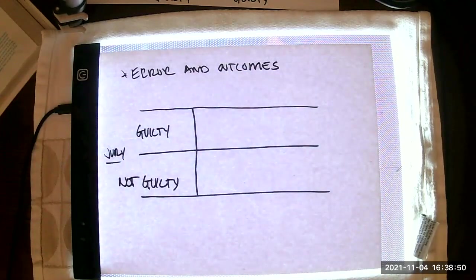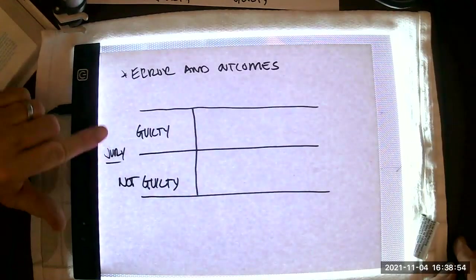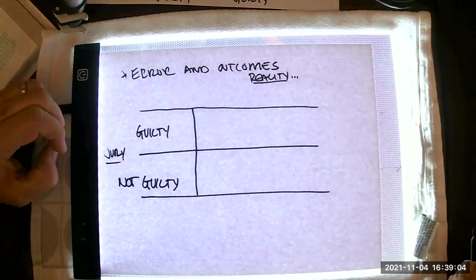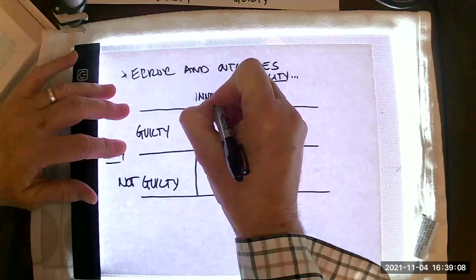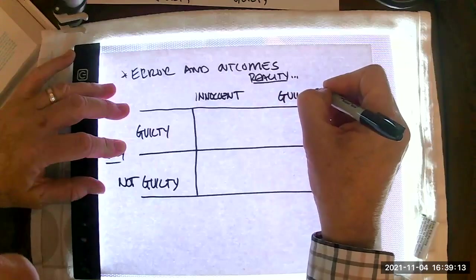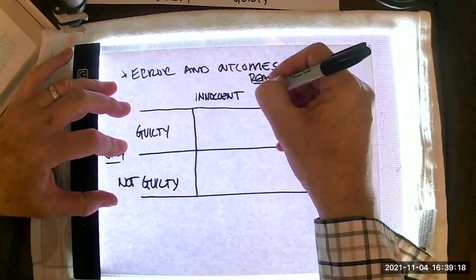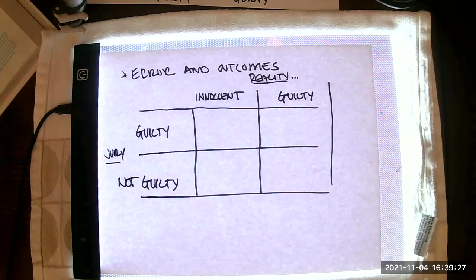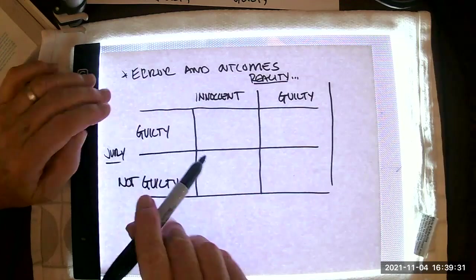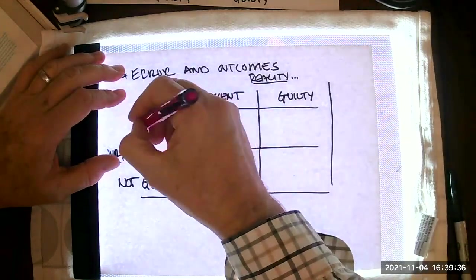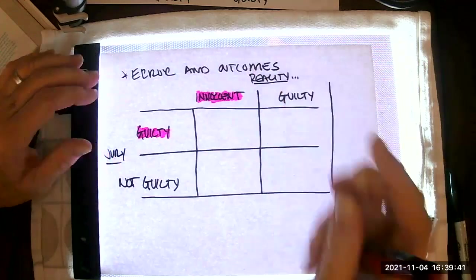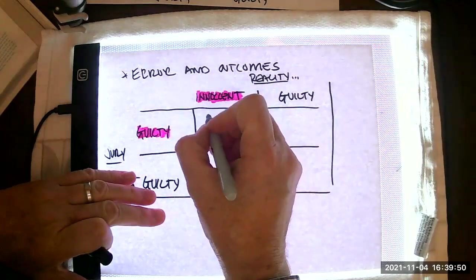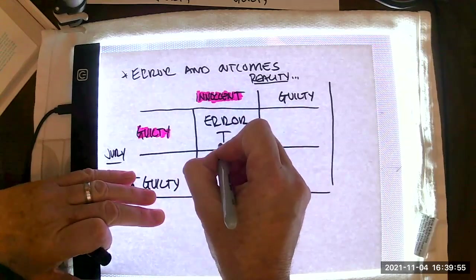The jury comes back with either guilty or not guilty. Those are the two options. But that's their take on reality. What really happened? Maybe the person was innocent or maybe the person was really guilty. If my jury comes back with a notion of guilty, yet the person in question is innocent, and yes, we all know that happens, has the jury done the right thing? No, the jury has made an error. I'm going to call that error number one.